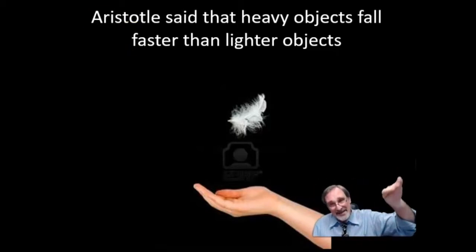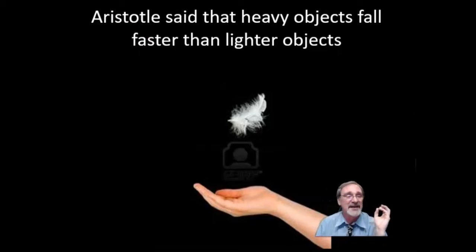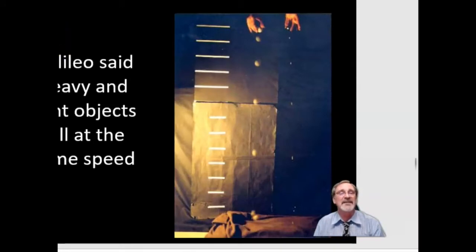And it's just like we have the heavier mass on a pendulum swings at the same rate that a lighter mass does. Galileo realized that things that are heavy and light, if you don't count air resistance, fall at the same speed.